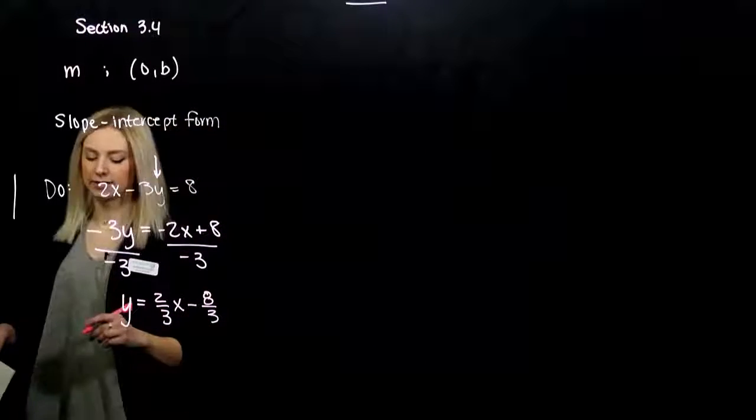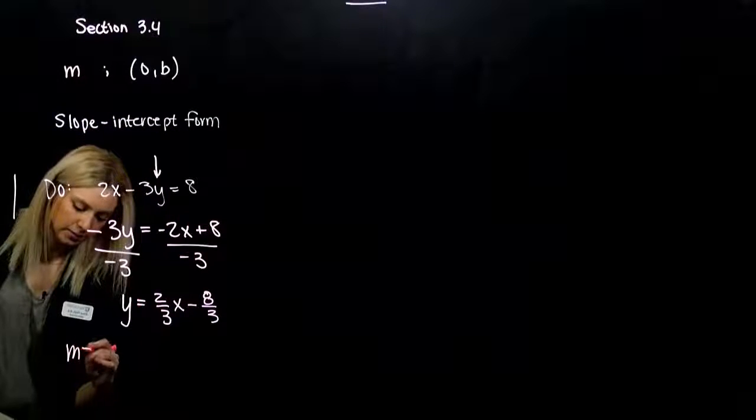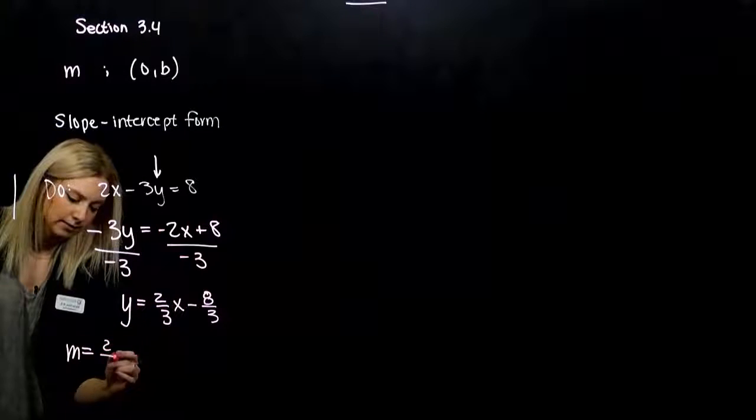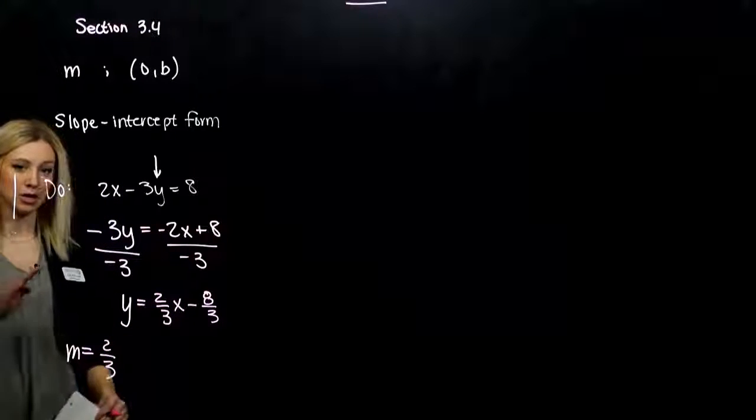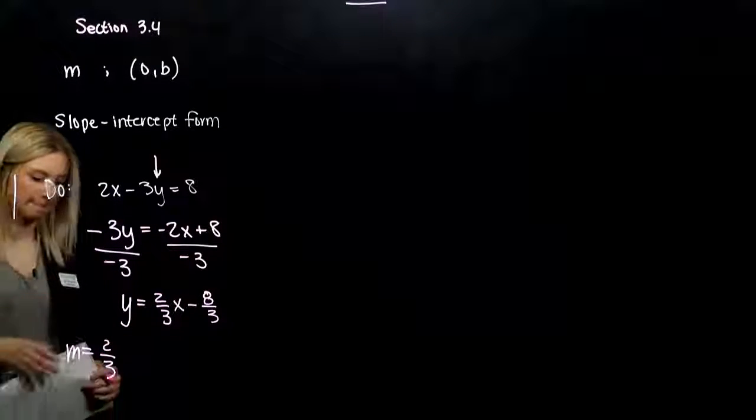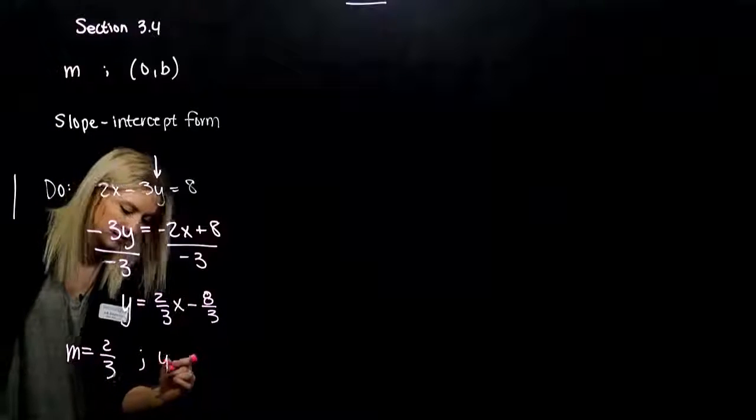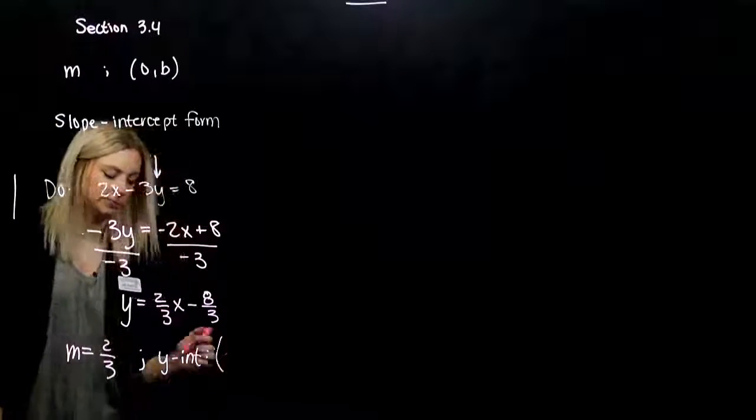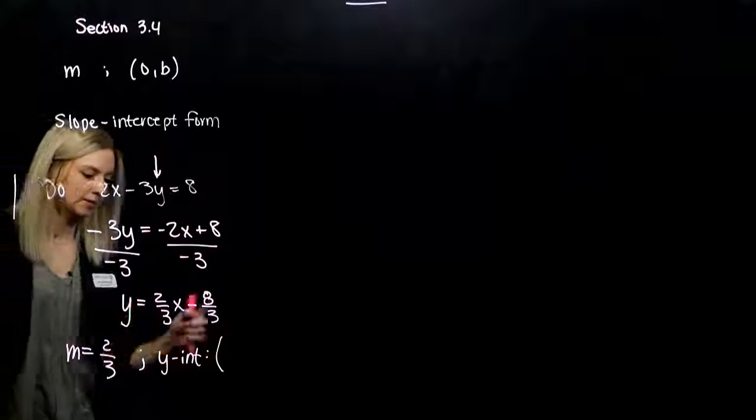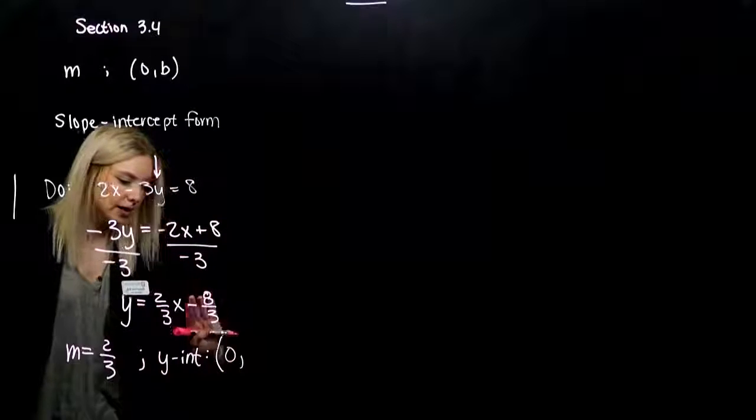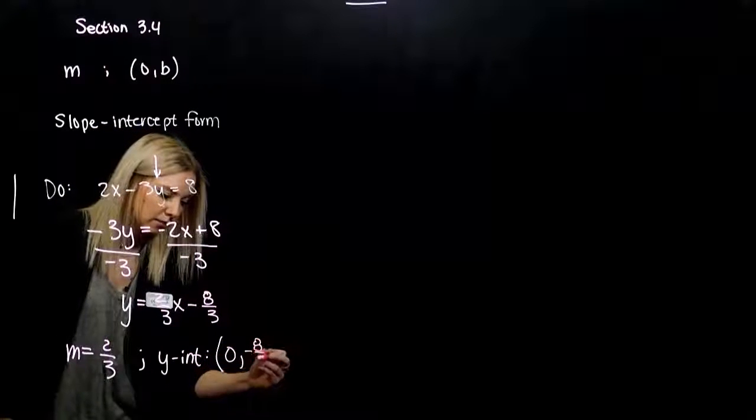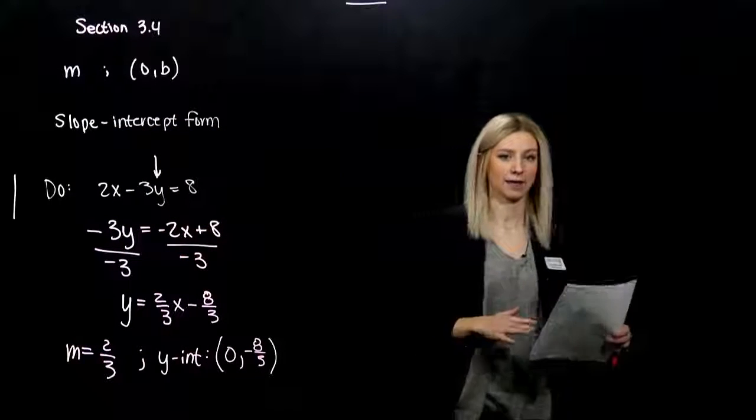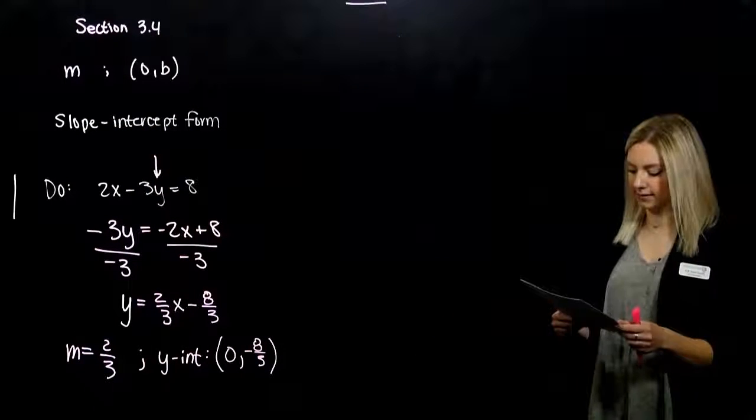The slope is the coefficient on x, so it's 2/3, increasing from left to right. The y-intercept happens at a point, not just an arbitrary constant. It happens at (0, -8/3). So it's going to cross in the lower half of the plane, that y-axis.